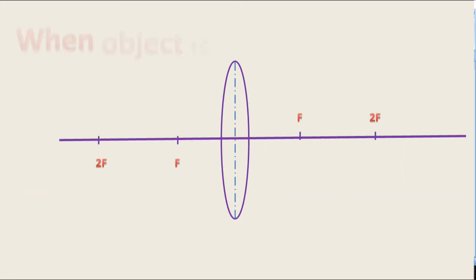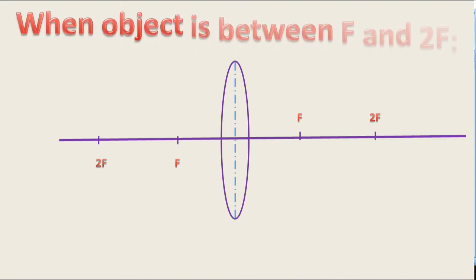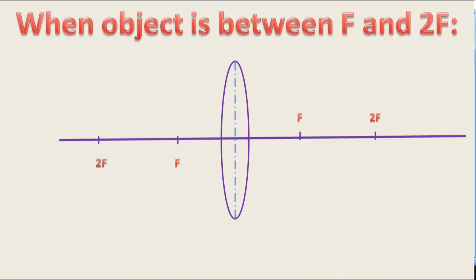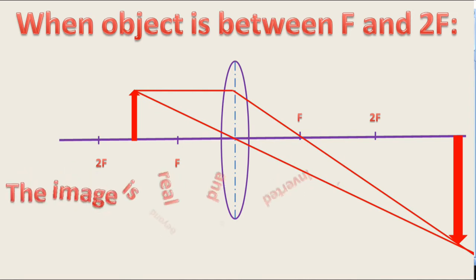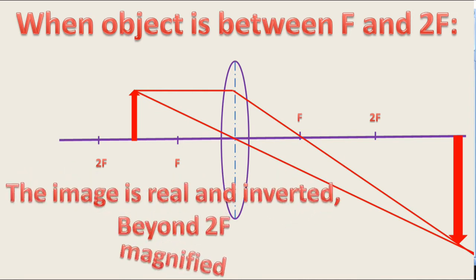Image formed by a convex lens when the object is between F and 2F: the rays of light coming from the object intersect behind 2F. The image is real and inverted, and is larger than the object.